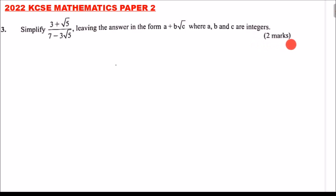You get 3 marks. So to be able to do this, let's first of all write our expression: (3 + √5) ÷ (7 - 3√5).